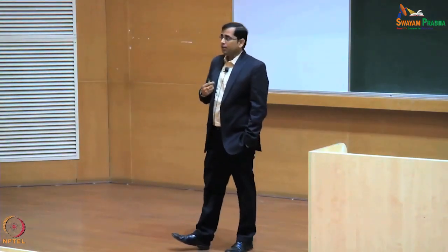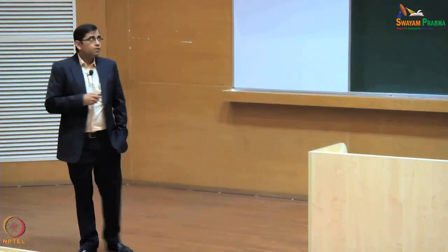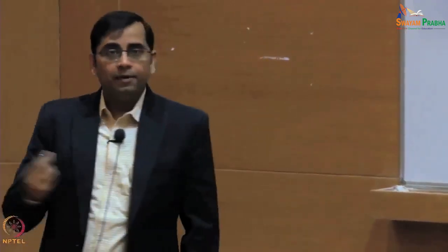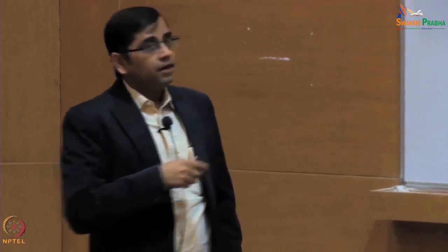Going back to the last lecture: we discussed gene cloning, where you have a plasmid vector and fuse a gene of interest to make a recombinant DNA molecule. That vector contains marker genes like antibiotic resistance genes so you can select the right clones. After transformation into bacteria, you select the right bacterial colony containing your gene of interest, multiply it, make more copies, and use expression systems for protein production.